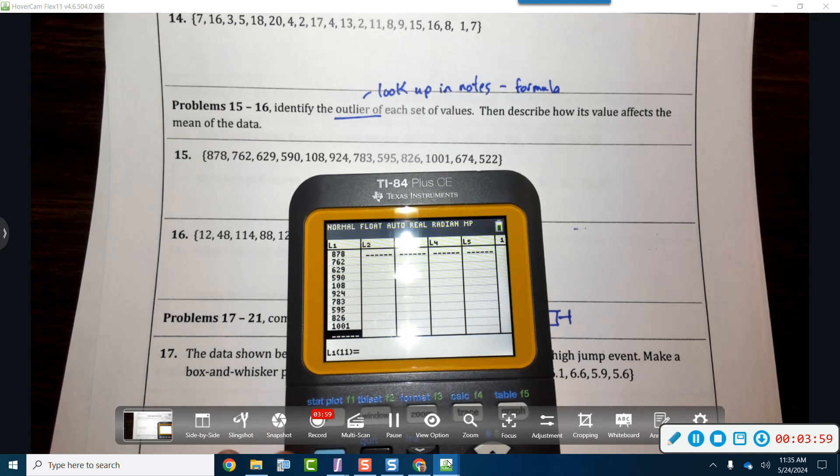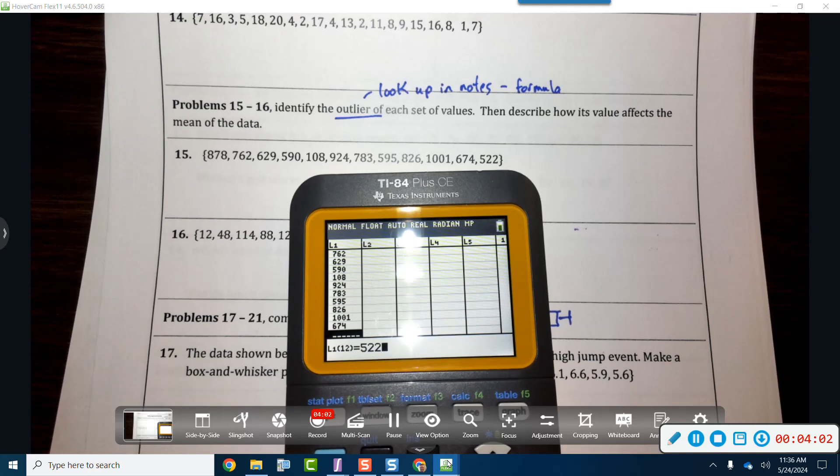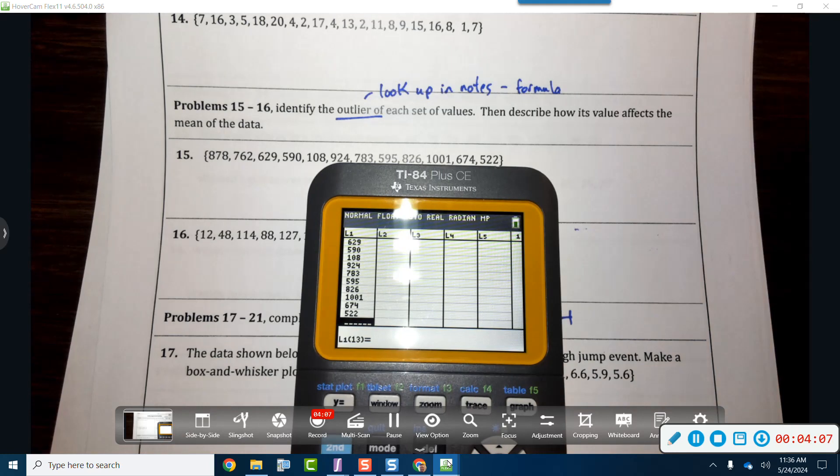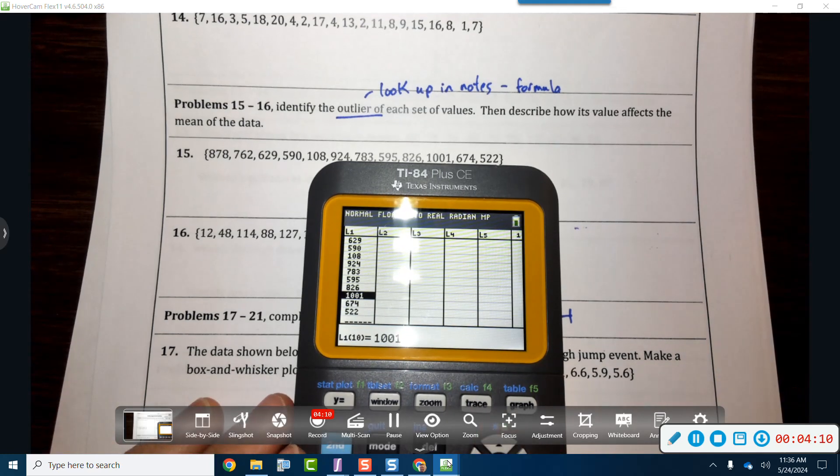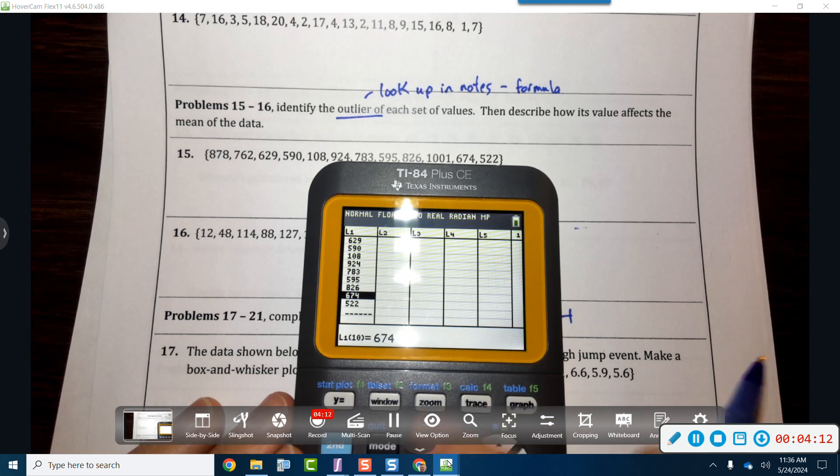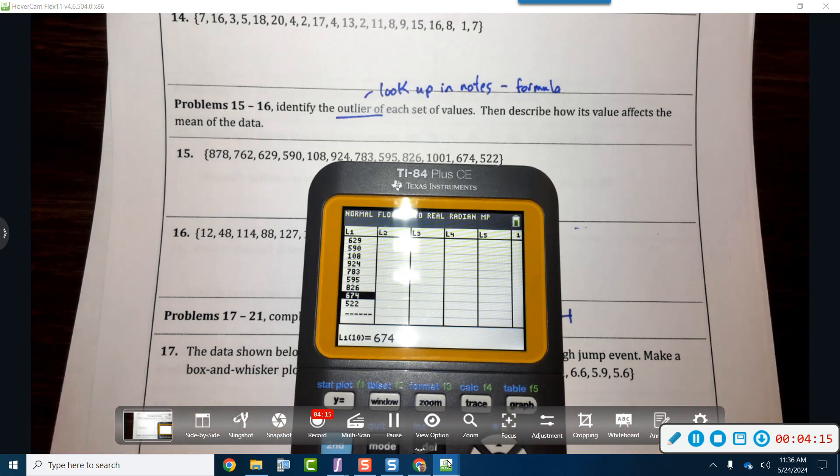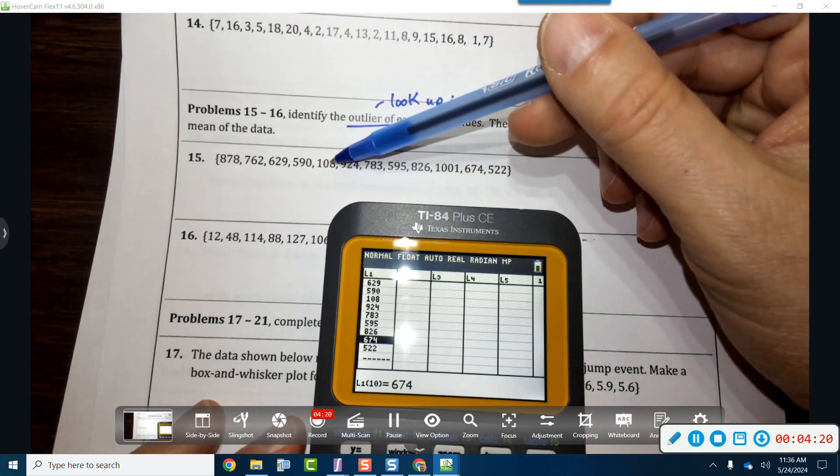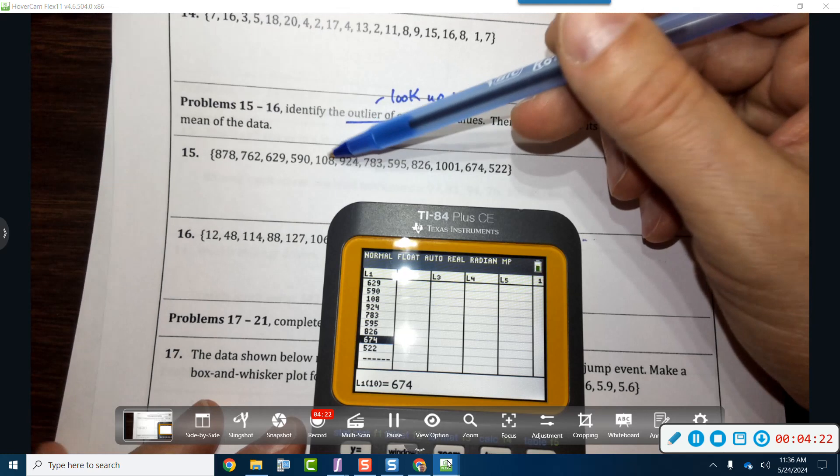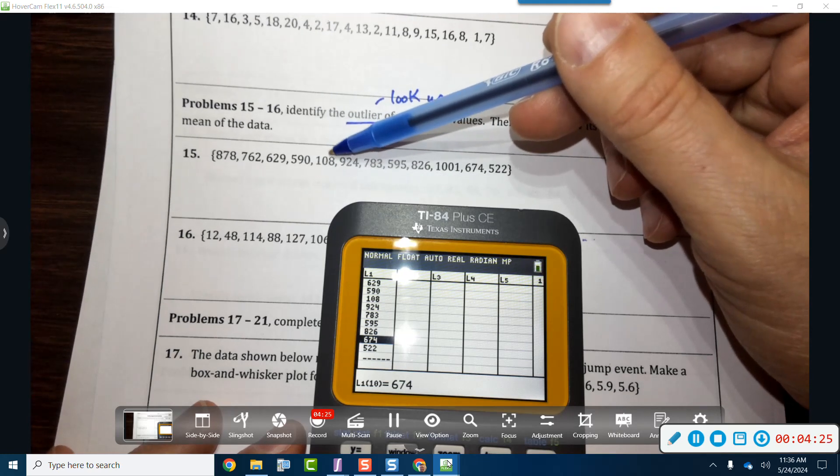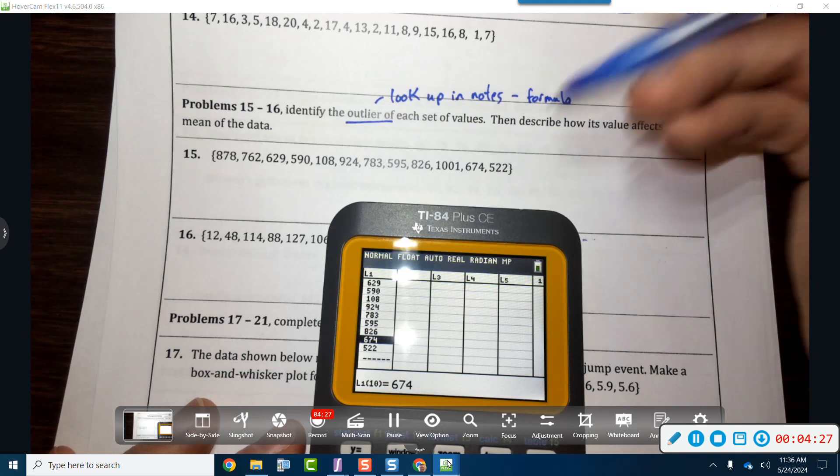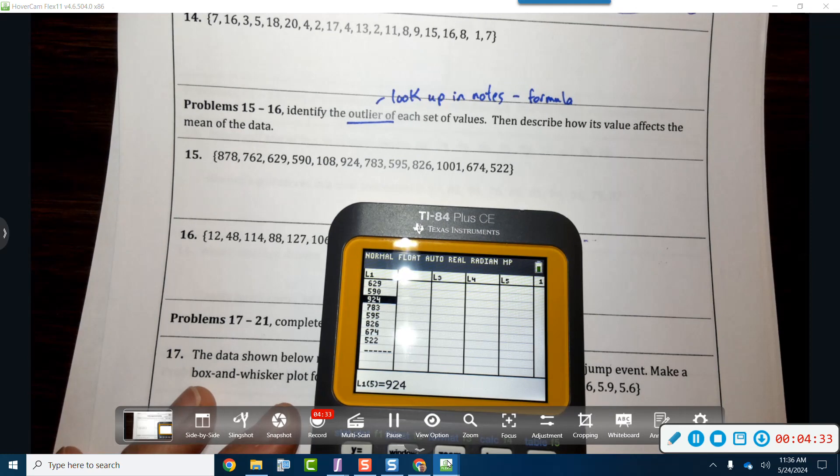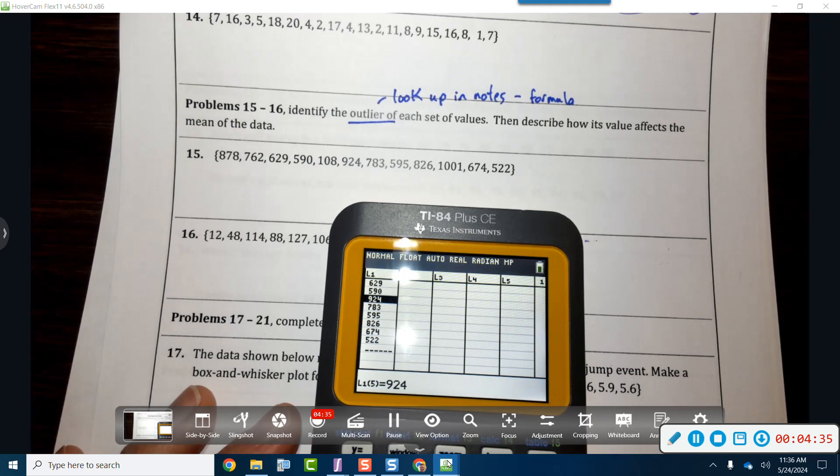That kind of feels like an outlier, 674, 674, and 522. So I feel like 1001 is an outlier, so let's go ahead and delete him. We delete him because we want to see if he actually is. Maybe this 108 is an outlier. Let's look into that too. Maybe the 108 is as well. So what I'm going to do is I'm going to go ahead and delete the 108, and I'm going to do a stat calculate one-variable stats.